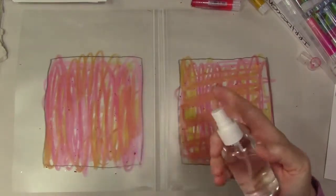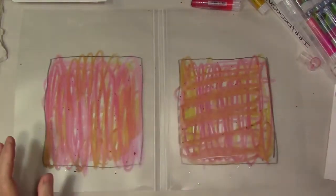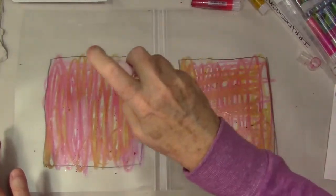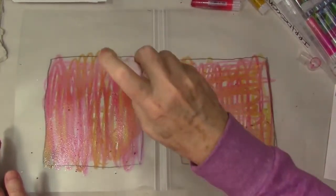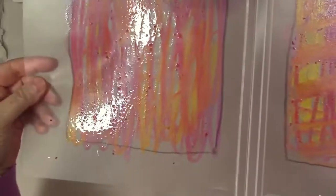Analogous colors is just like red to yellow, on the same area of the color wheel or the same side. Now I'm spraying that down to activate the gelatos, six to eight inches away, light spray. You don't want that to run.